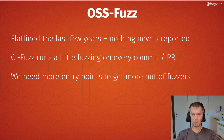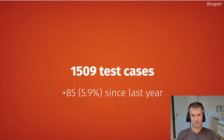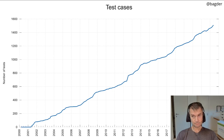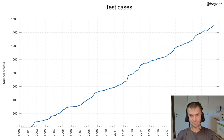We need more entry points and there's certainly room for improvement with fuzzing. Over the year we added 85 new test cases, which is pretty good after 24 years — still growing at 5.9% in number of test cases. Test cases are what make curl remain solid and stable when we iterate and evolve forward. It's pretty much a linear growth, and the counter only counts the new system starting from 2001.